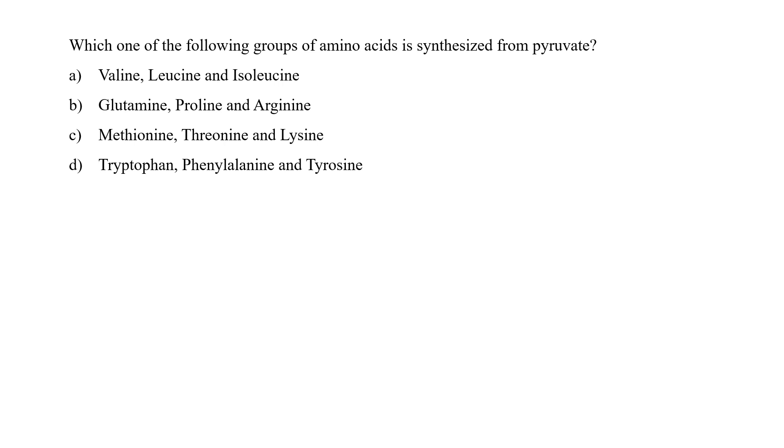Which one of the following groups of amino acid is synthesized from pyruvate? Valine, leucine and isoleucine, glutamine, proline and arginine, methionine, threonine and lysine, tryptophan, phenylalanine and tyrosine.